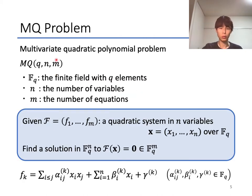Given a system of multivariate quadratic equations with n variables and m equations over the finite field with q elements, the MQ problem is a problem solving the given system f(x) = 0. This problem is proven to be NP-complete and is considered to be secure against quantum attackers.